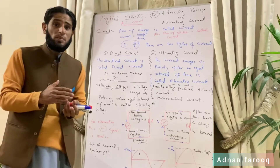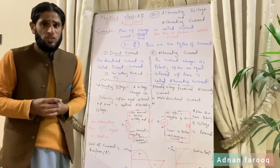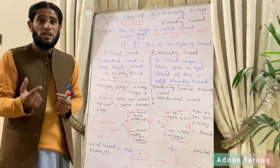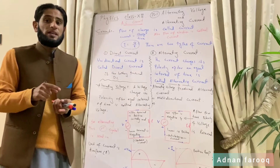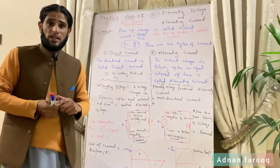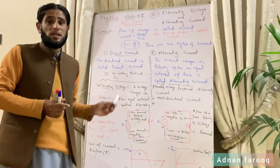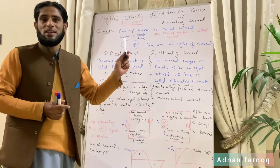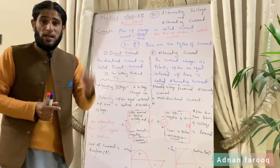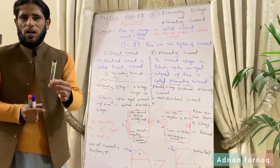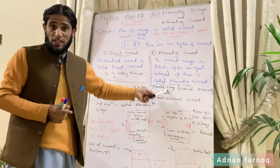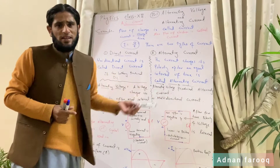V ہمیں پتا ہے کہ I بناتا ہے — voltage current بناتا ہے، potential difference ہے۔ Alternating voltage جو current بنائے گا اس current کا نام ہوگا alternating current۔ تو ہم نے لکھا: alternating voltage produces alternating current۔